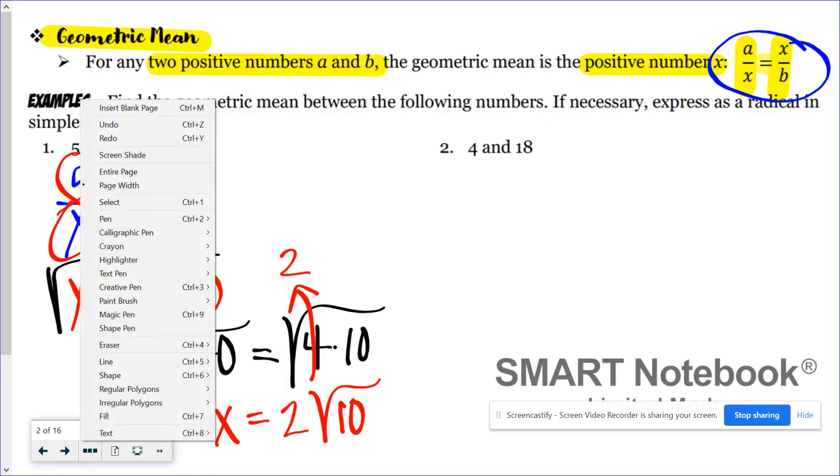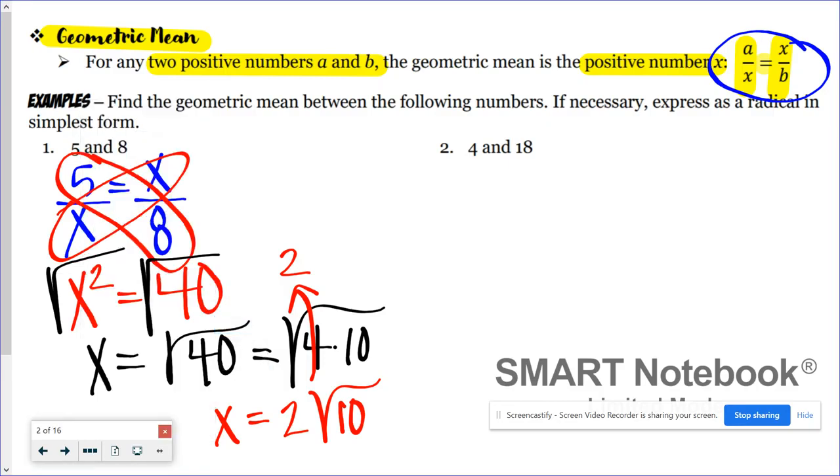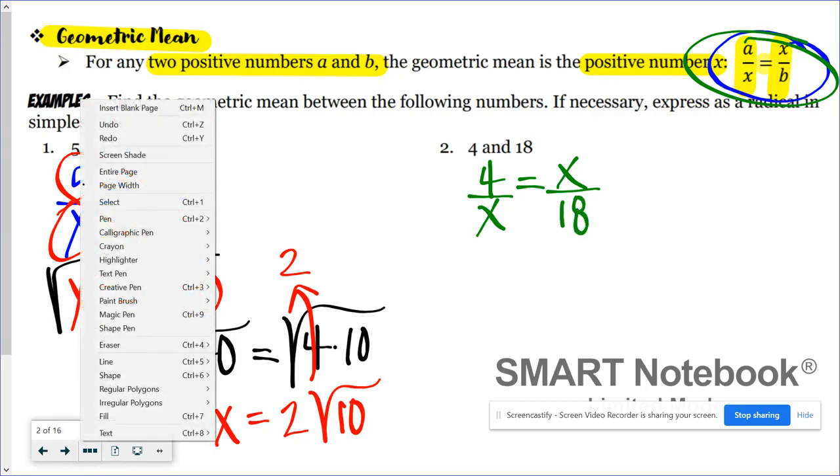Taking a look at problem 2, I'm just going to do exactly the same thing. I'm going to create a proportion using 4 and 18 as a and b, so I'm going to have 4 over x equals x over 18. My next step is to cross multiply.